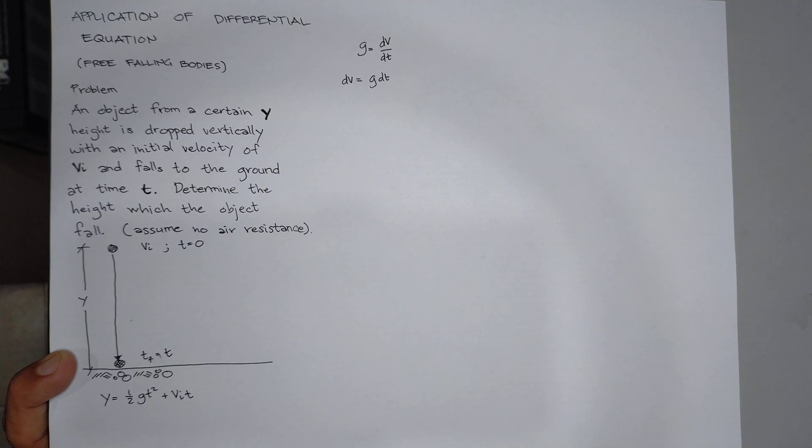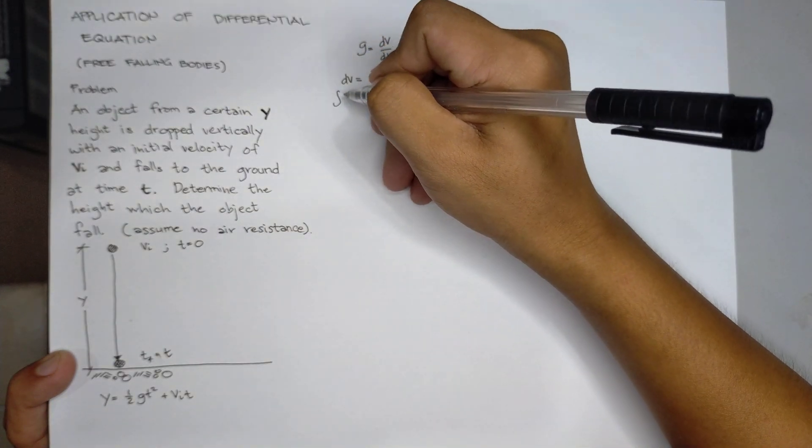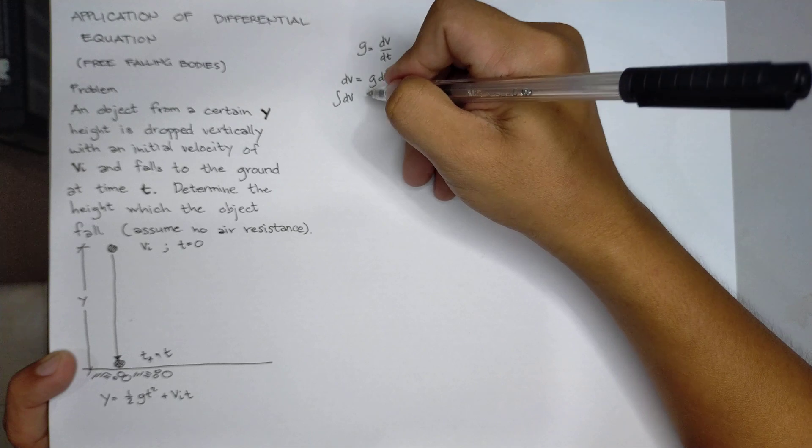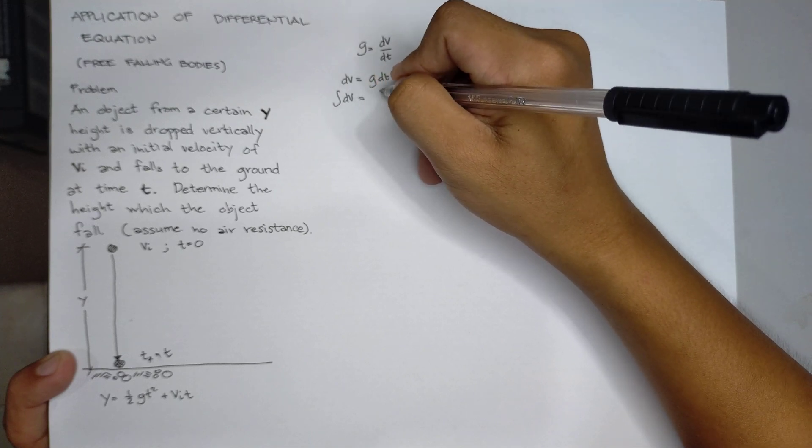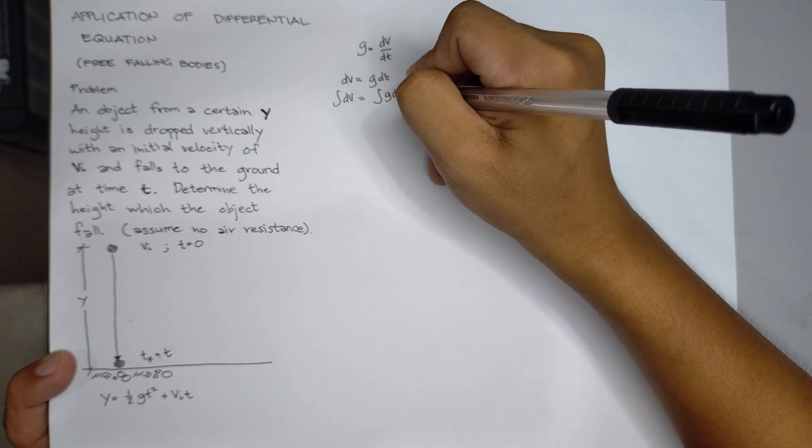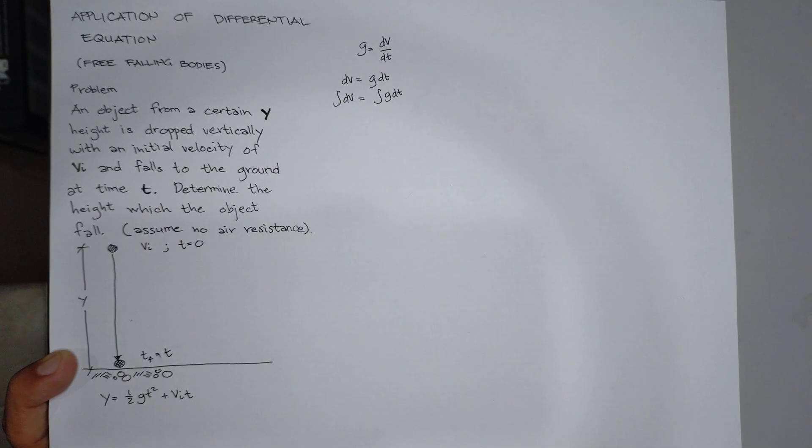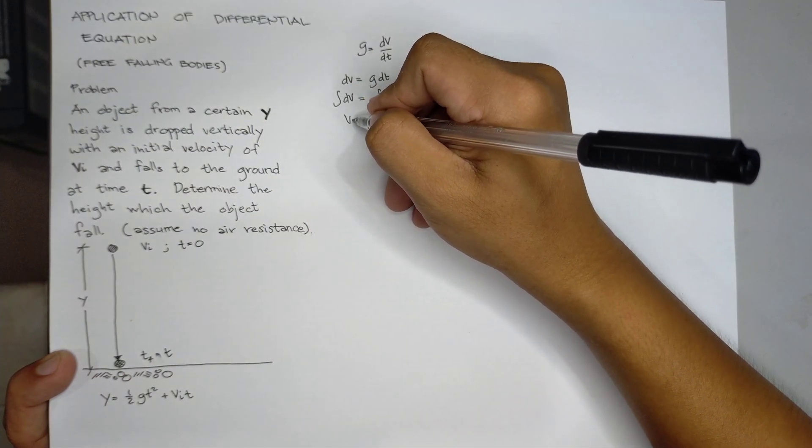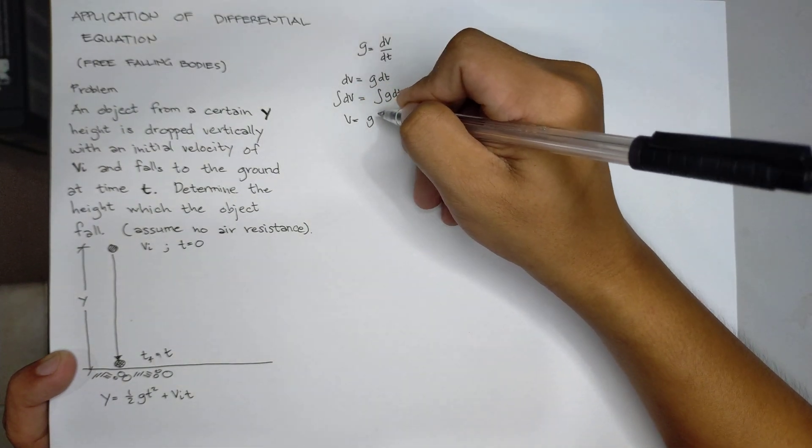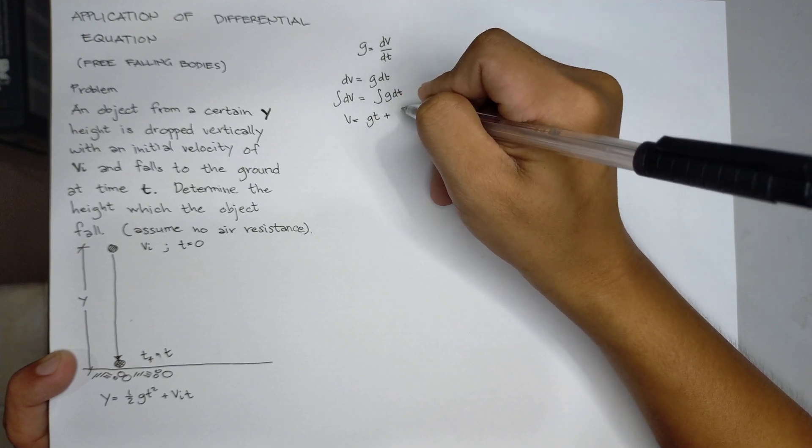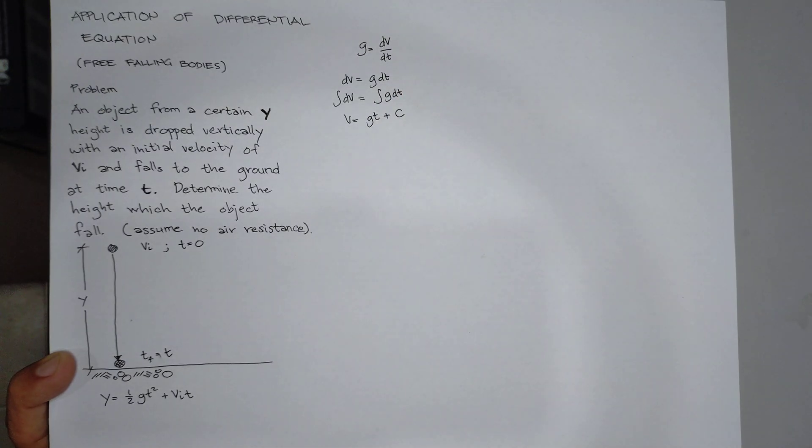From there, we integrate. We will have integral of dv equals to integral of g dt. We have v equals to g t plus c, where c is the arbitrary constant.